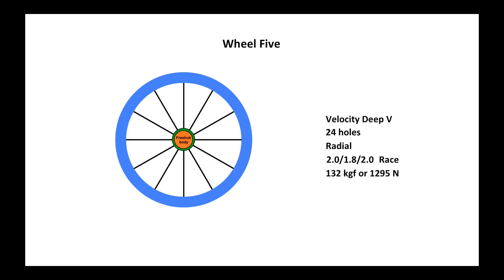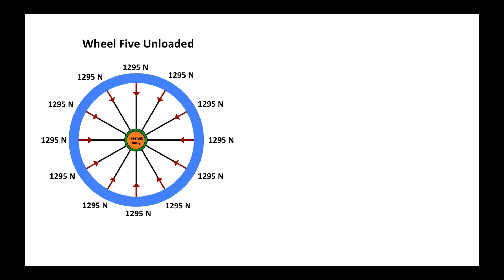Wheel five is exactly like wheel two, except I have considerably raised the tension on the starting wheel. In wheel five, all of my spokes are set to a starting tension of 1,295 newtons, which is about 132 kilograms of force.